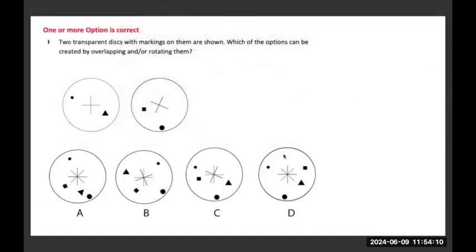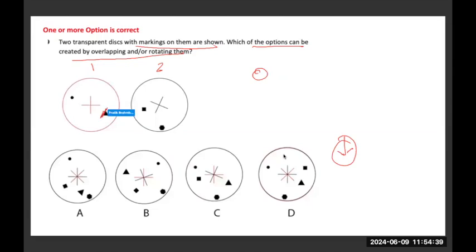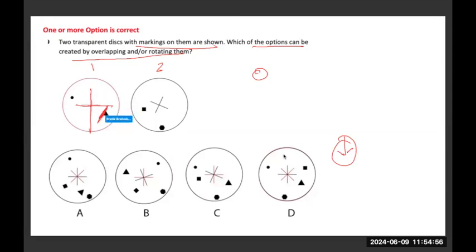You are given two transparent discs — one and two — with markings on them. Which of the options can be created by overlapping or rotating them? In this kind of question, instead of jumping directly into the options figure, we should first take elements. A circle is a little bit difficult to track because it does not have any edges, so I will first take a triangle, which has three edges, and then look at the orientation of the triangle with reference to the cross — the edge of the triangle is facing the center of the cross.